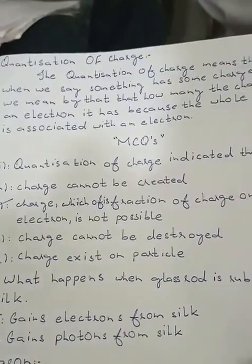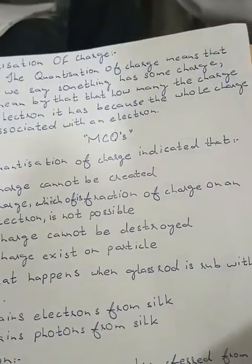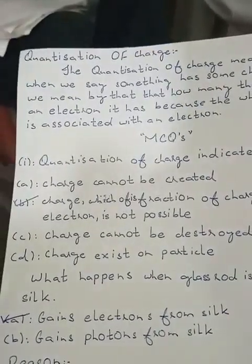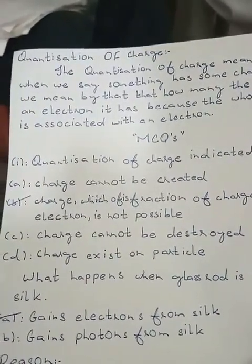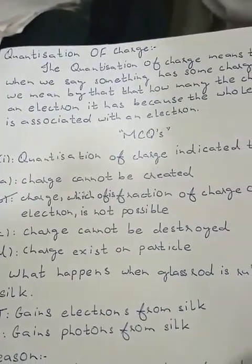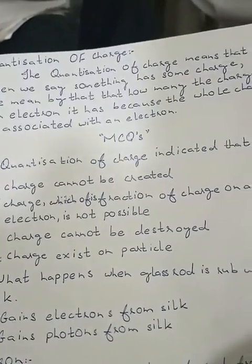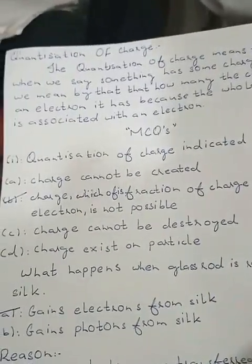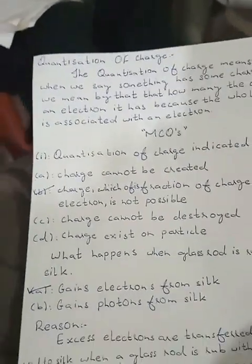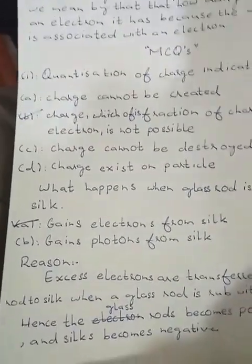Is this related to MCQ? Quantization of charge indicates that a fraction of charge on an electron is not possible — that is option B.